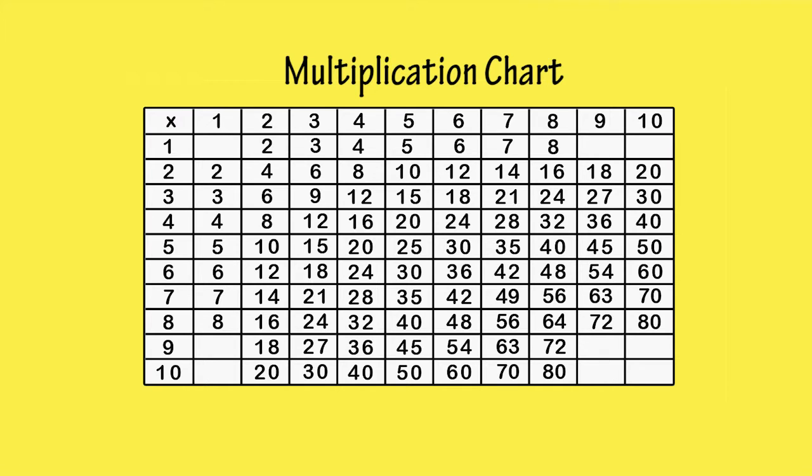We can start by filling in the blank boxes in the 9th column. 9 times 1 is 9. The next 7 boxes are already filled in from when we did the other times tables, so that makes things very easy. 9 times 9 is 81. 9 times 10 is 90.